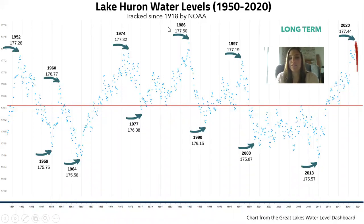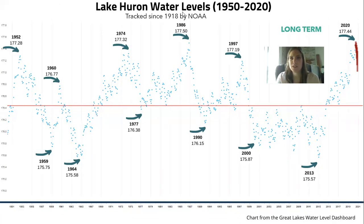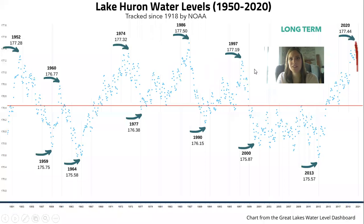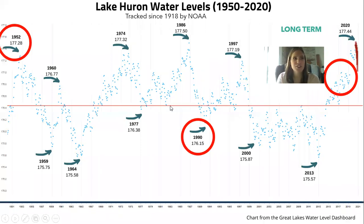The all-time high in 1986 was 177.5 meters. When you hear on the news that we're breaking monthly highs, that is true. But the highest levels are usually in July and August, so we'll see how that shapes up in the next few months to see if we break the all-time high. A few other Great Lakes broke their all-time highs last year. As you can see, we have a number of all-time highs and they happen approximately every 13 years — around 1952, 1990, and 2018.